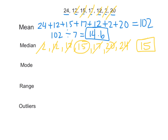The mode is the number that occurs the most. If you look at this data set, we have 24, 12, 15, 17, 12, 2, and 20. Since we have two 12s, 12 is the mode.